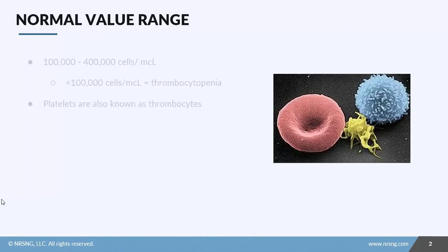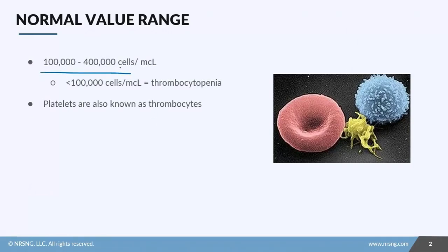In this lesson, we're going to talk about platelets and how they play a role in your patient's ability to clot. The normal values for platelets are 100,000 to 400,000 cells per microliter. Anything less than 100,000 cells is considered to be a condition called thrombocytopenia.